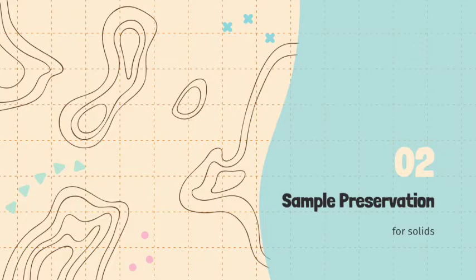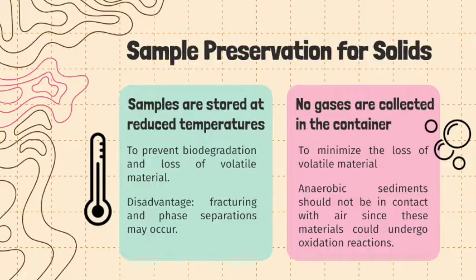The second step in a sampling plan is sample preservation. Without this step, many samples would have their chemical composition changed, which may be due to the loss of volatile material, biodegradation, and chemical reactivity. To preserve solid samples, two important procedures must be done. First, store the solid at low temperature to prevent biodegradation and loss of volatile material, though a drawback is that fracturing and phase separation may occur. Second, the container should not contain gases, especially oxygen, as it might cause oxidation reactions and loss of volatile components.